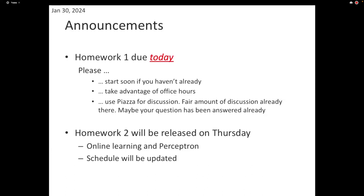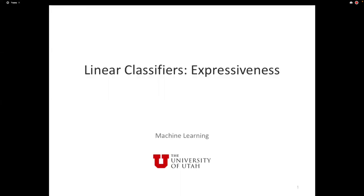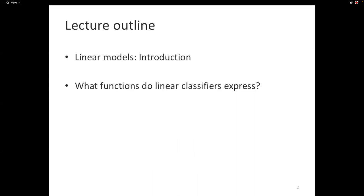Let's pick up with the actual technical content and go back to our discussion on linear models. In the last lecture, we looked at linear models. A linear model for classification basically says: given a set of features, assign a weight for every feature, take the weighted sum of the features, add a single number called the bias. If that final result is positive, the prediction is plus one or true; if negative, minus one or false. Linear regression involves taking the real number before any threshold.